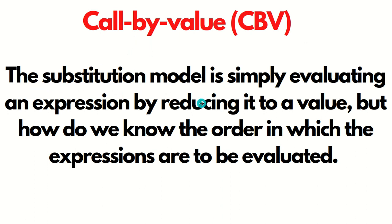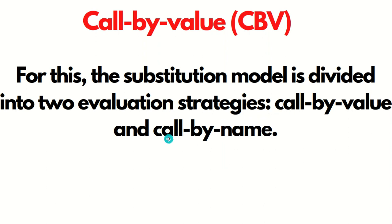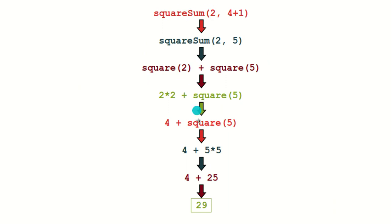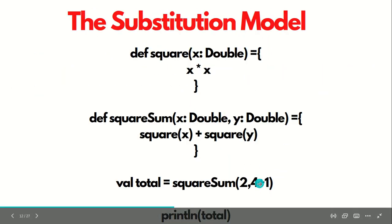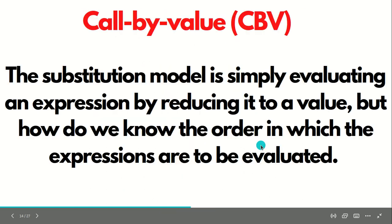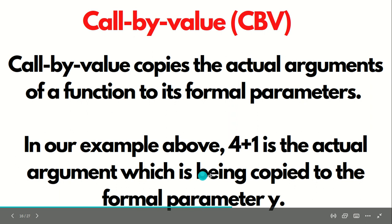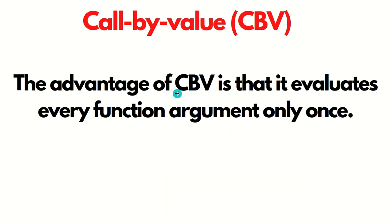The substitution model evaluates expressions by reducing them to a value, but the order depends on whether we use call by value or call by name. Call by value copies the actual arguments of a function to its formal parameters. In this case, four plus one is the actual parameter being mapped to the formal argument Y. The advantage of call by value is that it evaluates every function argument only once. It reduces the expression to its value before passing it to the function.